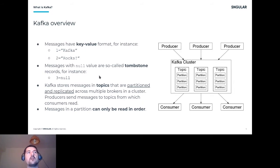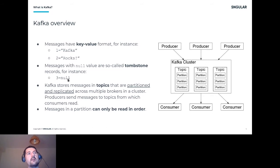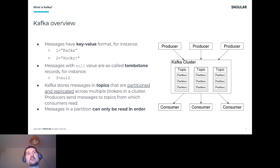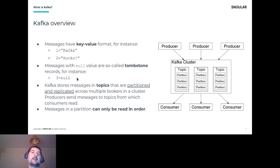There is a special type of record called a tombstone, which has a special meaning. Here you have a sample: key is '3' and the value is null. Records with a null value are called tombstone records — this is the terminology we use in the Kafka jargon. Kafka stores messages in topics that are partitioned and replicated across multiple brokers in a cluster.